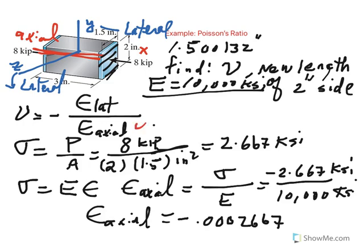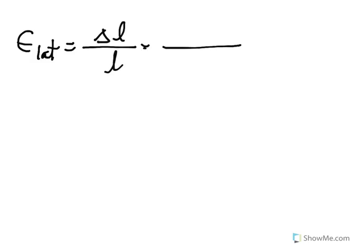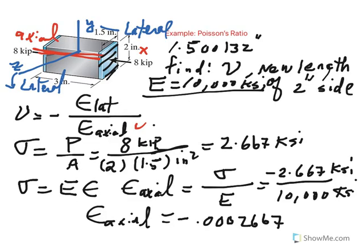We need now to find the lateral strain. Remember, the lateral strain could be determined based on the equation that this is change in length divided by length. We already know that the 1.5 inch side changed to 1.500132. The difference divided by initial length on that side. Remember, the 1.5 inch side is along the z-axis, which defines the lateral direction.